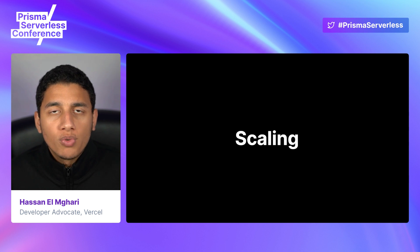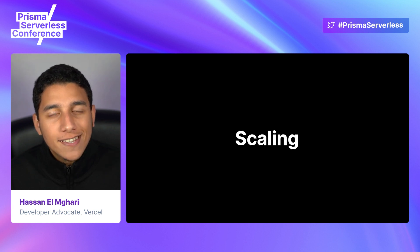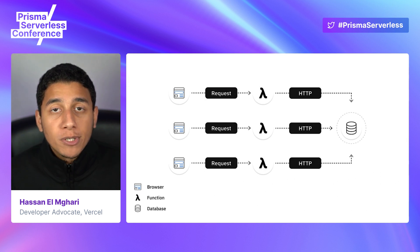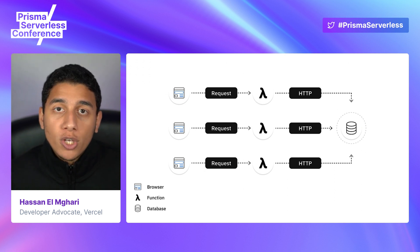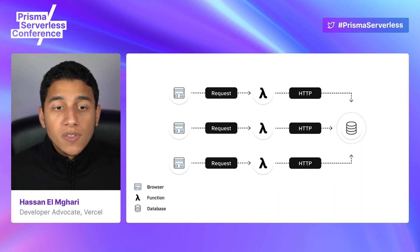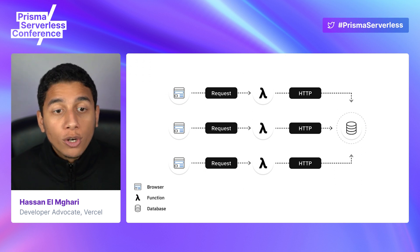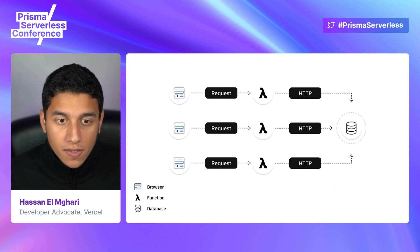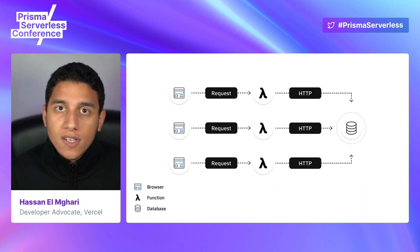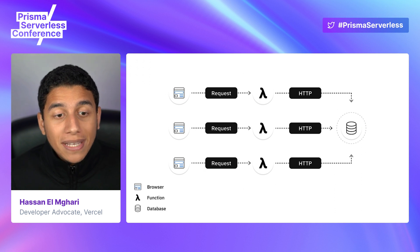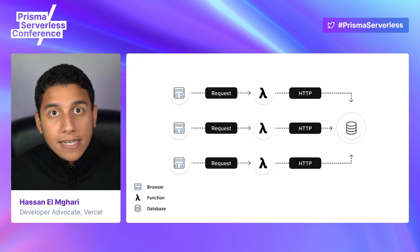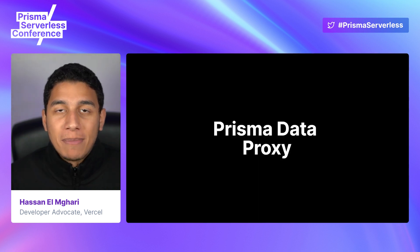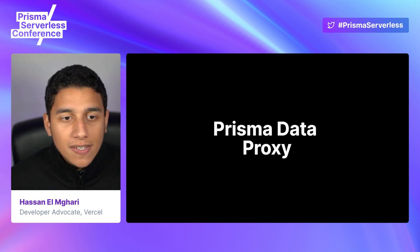We've just built our serverless application using Next.js API routes, Prisma, and a Postgres database hosted on Railway, but there's one issue — it's not going to scale very well due to connection pooling. This happens because each user request triggers a serverless function, which opens a new connection to the database. If a hundred users click create new contact, a hundred serverless functions are invoked and a hundred temporary connections are made. The problem is there's a connection limit on our database, and if that gets exhausted, requests will start to fail. Functions opening and closing connections also adds latency and makes our app slower.